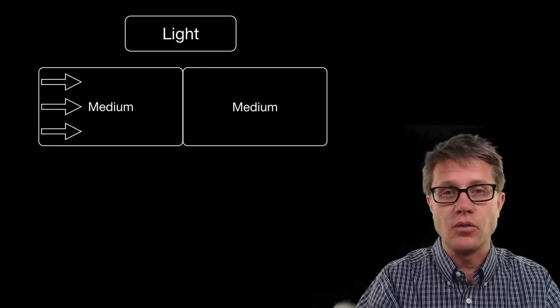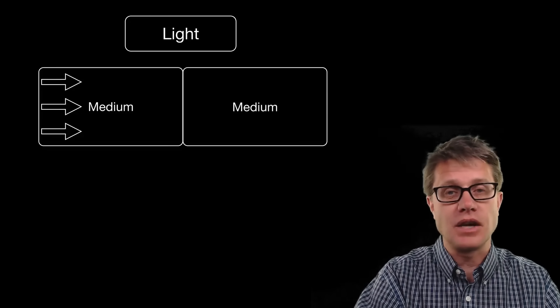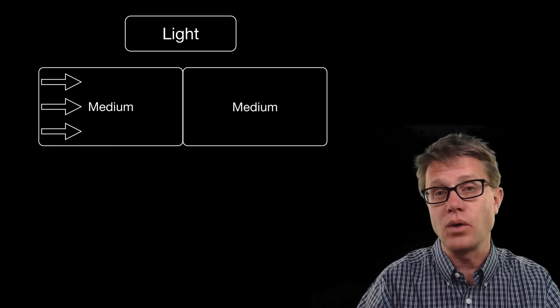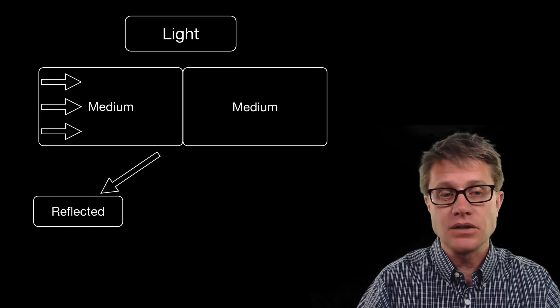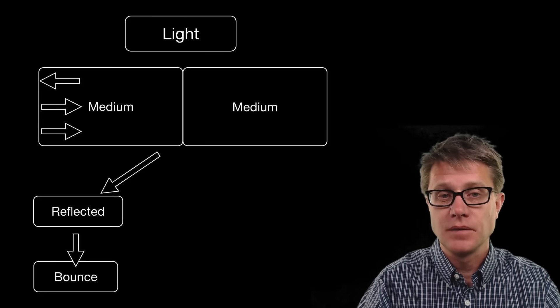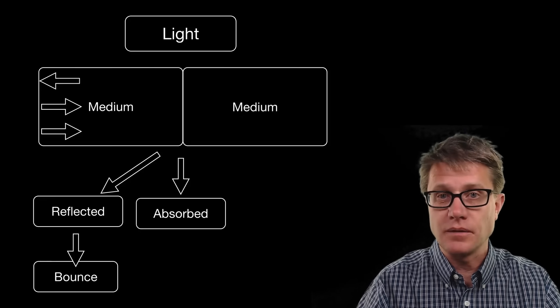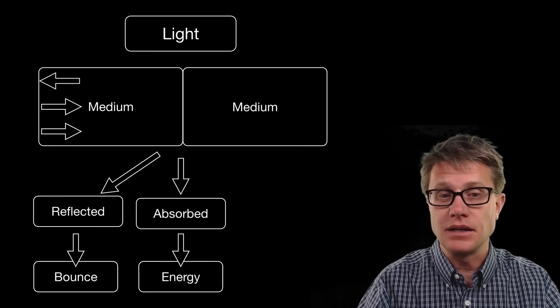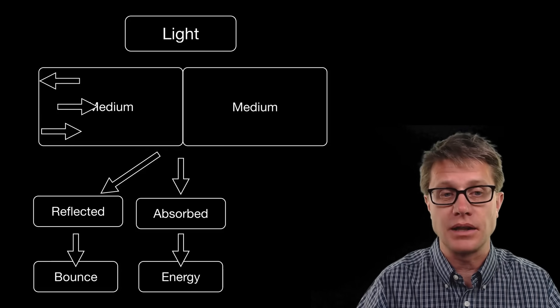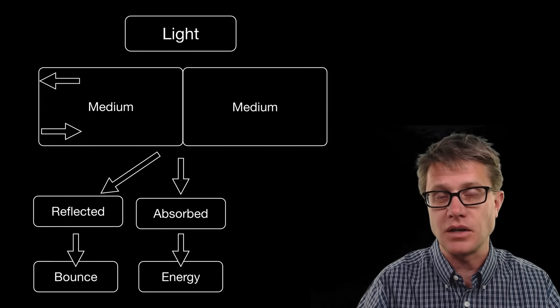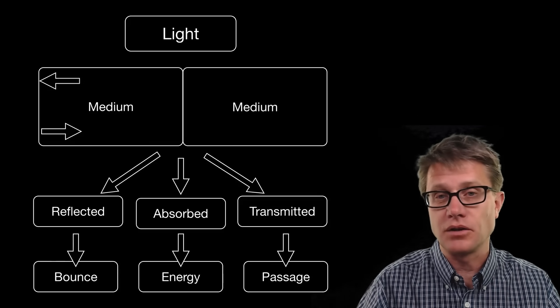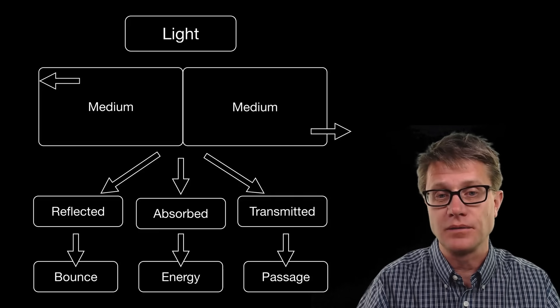When light moves from one medium to another, in the example I gave a second ago it was moving from air to the gummy bear itself, one of three things can happen. First, we can have reflection. That is when the light bounces off the surface. We could also have absorption, and that is when the light is actually converted to another form of energy. This occurs when that light simply disappears as it enters another medium. Or it could be transmitted. In other words, it can be granted safe passage through the medium itself.